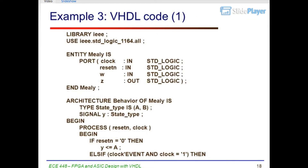Example 3 VHDL code, part 1: library IEEE; use IEEE.STD_LOGIC_1164.ALL. Entity Mealy is port: clock, in STD_LOGIC; reset, in STD_LOGIC; w, in STD_LOGIC; z, out STD_LOGIC; end Mealy. Architecture behavior of Mealy is. Type state_type is (A, B). Signal Y: state_type. Begin.